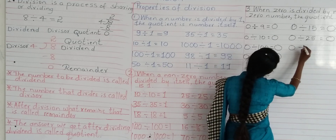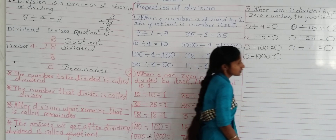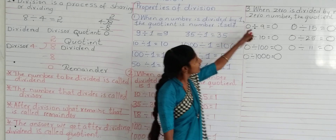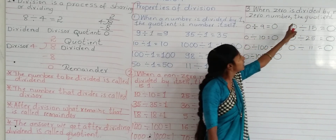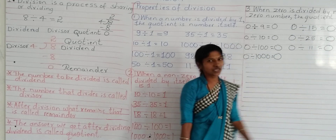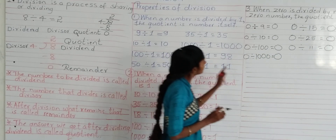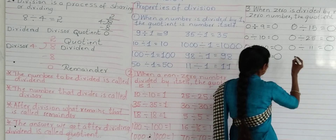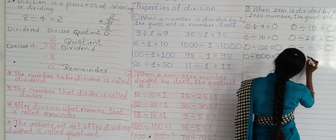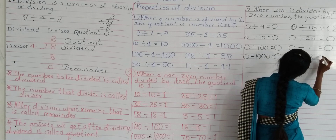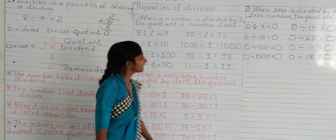0 divided by 15 is equal to 0. 0 divided by 25 is equal to 0. 0 divided by 11 is equal to 0. So when 0 is divided by a non-zero number, the quotient is 0. For example, 0 divided by 18 is equal to 0.